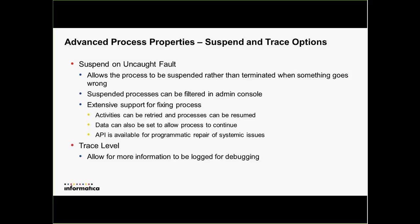What would happen is the process would go away and you'd be able to see in the console what went wrong, but you weren't able to do any kind of repair operations against it. Now we've added this option which will allow you to say: if something goes wrong, suspend the process so that you can go into our admin console, filter lists of processes in the suspended state, and potentially fix them or at least understand what's going wrong so you can prevent it from happening down the line.